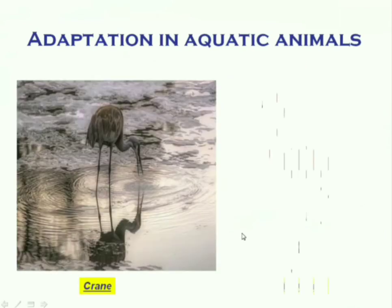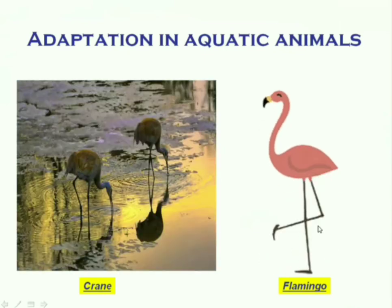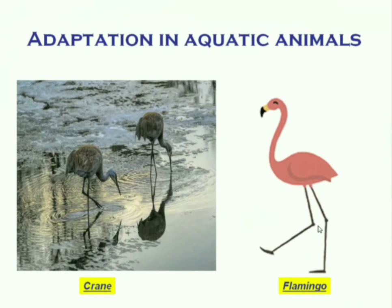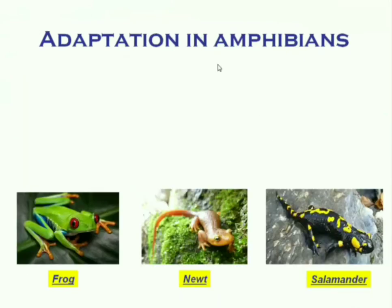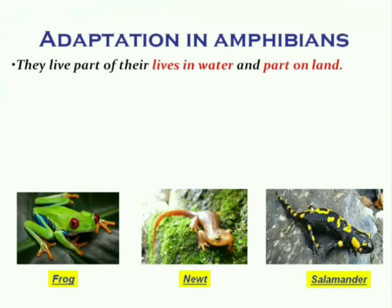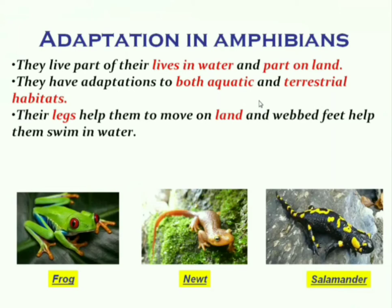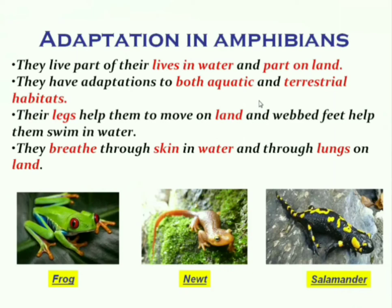Cranes and flamingos both have long legs to help them wade in water. Amphibians are animals that live on land as well as in water — like frogs, newts, and salamanders. They have adaptations for both aquatic and terrestrial habitats: legs to move on land, lungs to breathe on land, and they breathe through their skin in water. They also have webbed feet to move around in water.